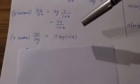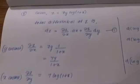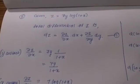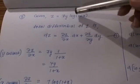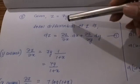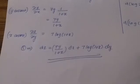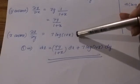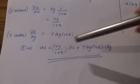For ∂z/∂y, x is constant. We have the term 7y·log(1 + x). Since log(1 + x) is constant with respect to y, the derivative of y is 1, so ∂z/∂y = 7·log(1 + x). Substituting into the formula gives the final answer for dz.